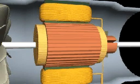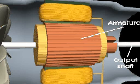The commutator is connected to a large coil of wire, called the armature, and to the output shaft.